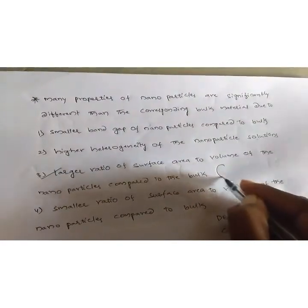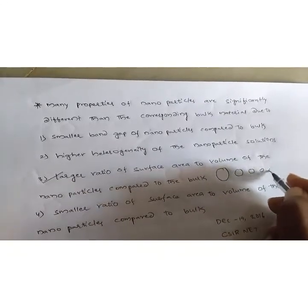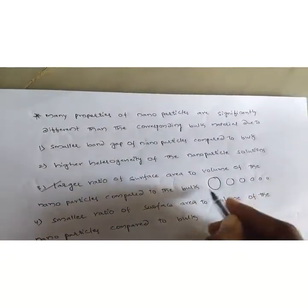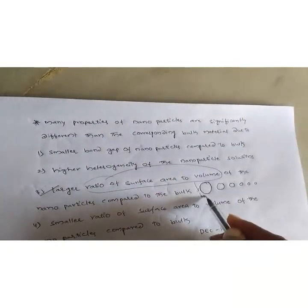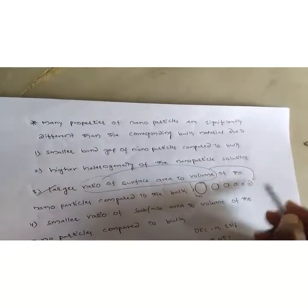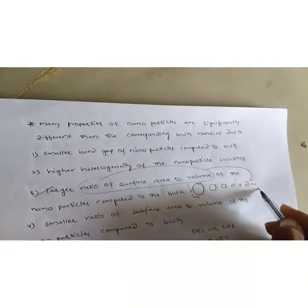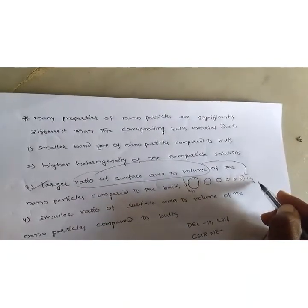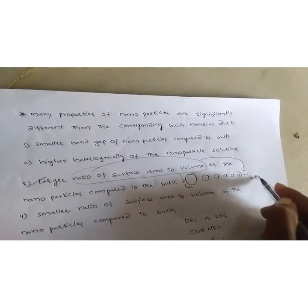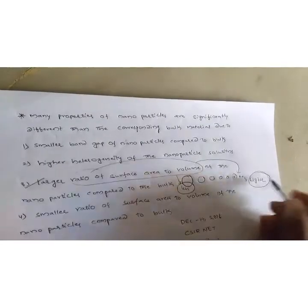Bulk materials have a smaller ratio of surface area to volume. When we go for small particles, the ratio of surface area to volume is higher.